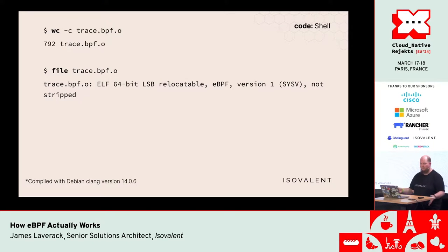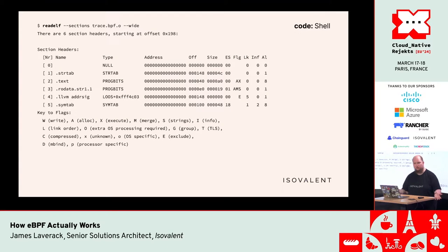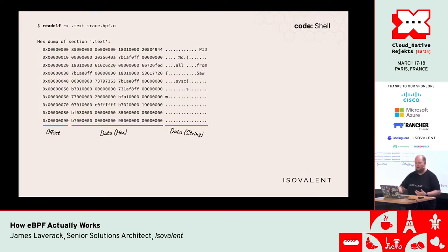Let's see what we got. If we look at our object file, when I compiled it you can see it is 792 bytes. The file command will tell us it's an eBPF file. We can use a hex dump to see the data in there, and when we render it as a string we can see our string is in there. We can also use readelf to get more information — this is an ELF format binary, which is just a binary format on Linux. readelf tells us it has a number of sections with different names; the one we care about is the one named .text. If we get a hex dump of .text, these are the eBPF bytecode instructions — this is the thing we have actually compiled.